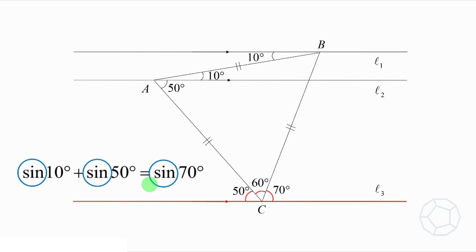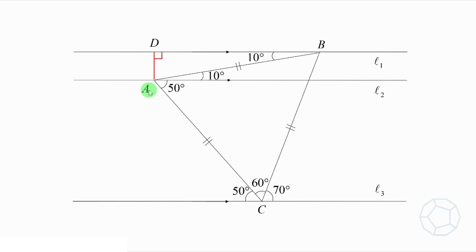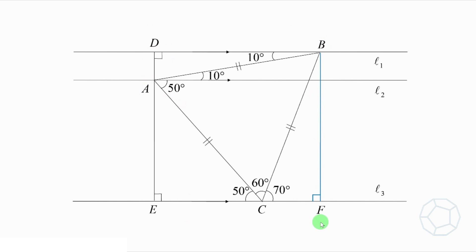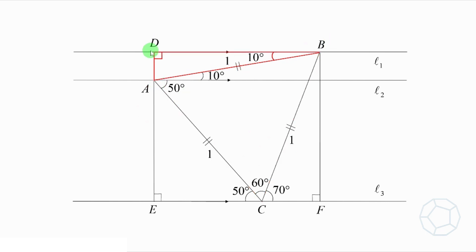Okay, we have 10 degrees, 50 degrees, and 70 degrees. So how do we obtain the sine of them? We need some right-angled triangles. Let's draw the perpendicular line from point A to the straight line L1 and denote the point as D. We do the same from A to L3 and call the point E. We draw one more from B to L3 and let the point be F. Let the side length of the equilateral triangle be 1. Because AD is the opposite side of 10 degrees and the hypotenuse is 1, therefore AD divided by 1 is equal to sin 10 degrees, which means AD equals sin 10 degrees.